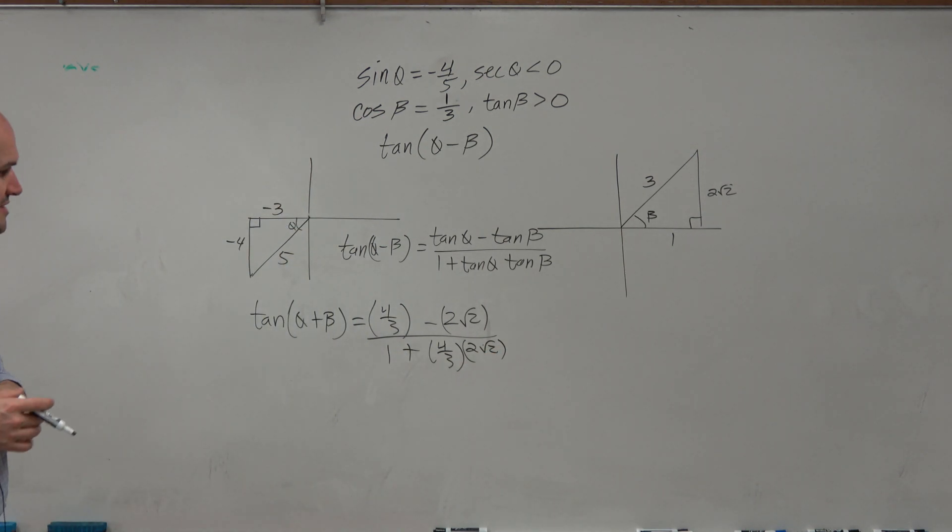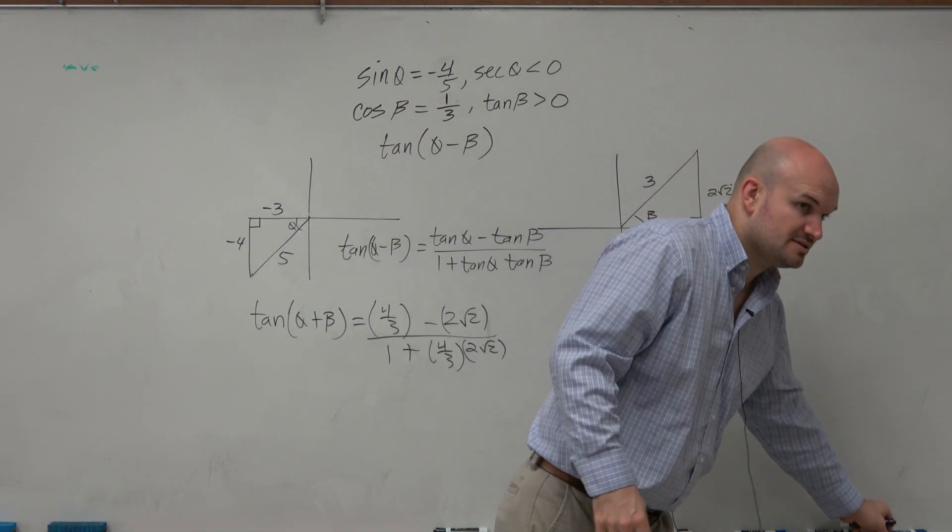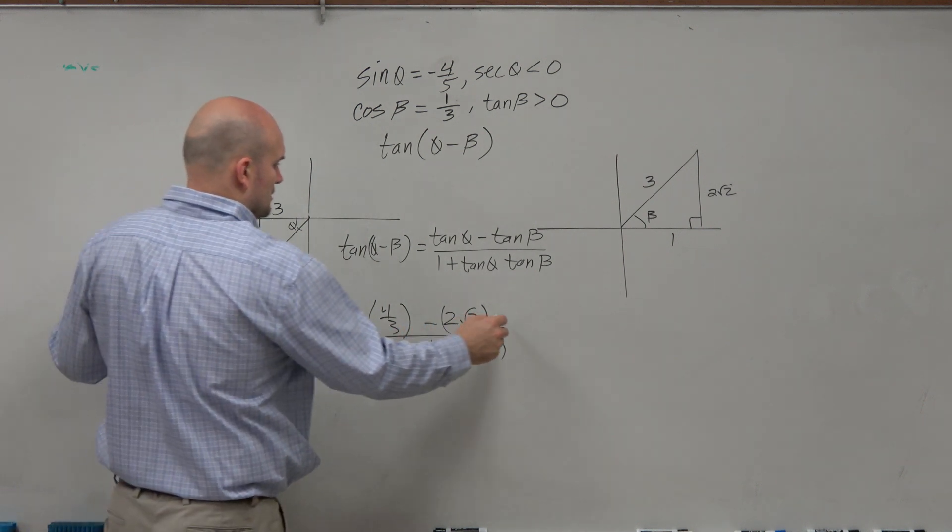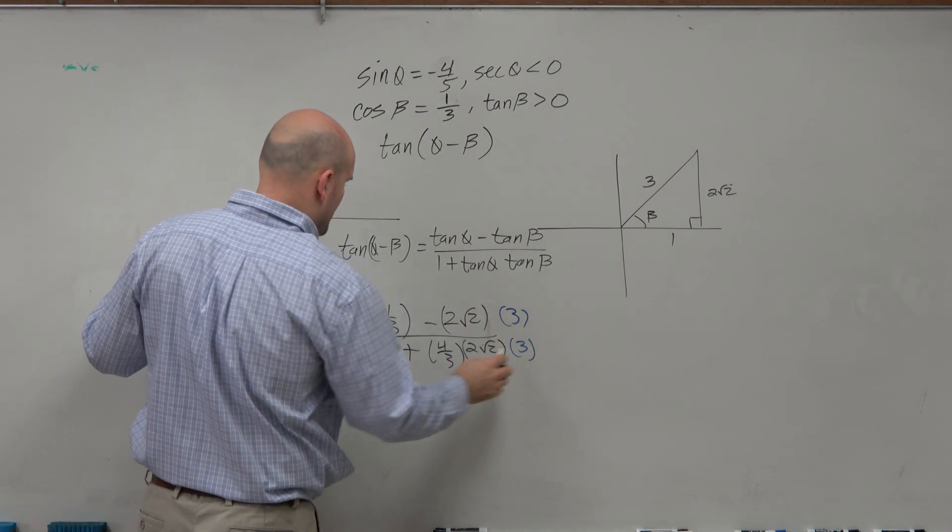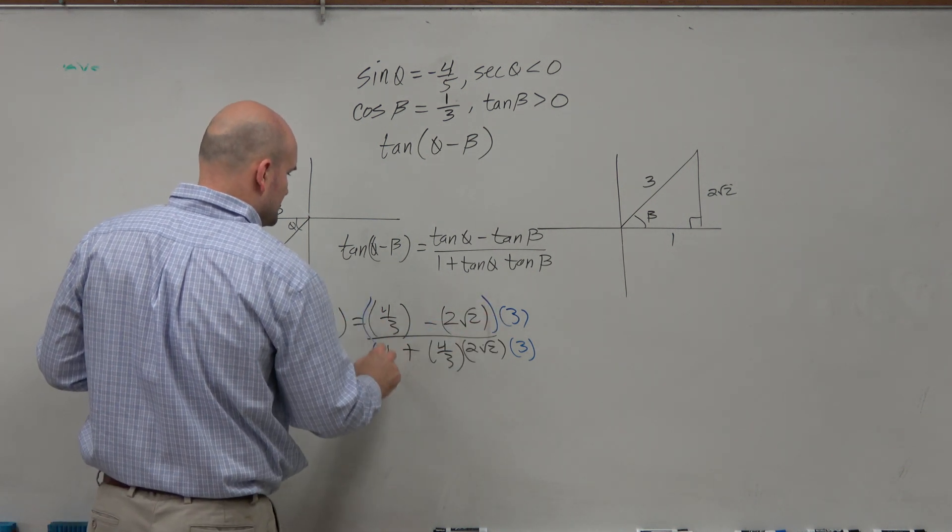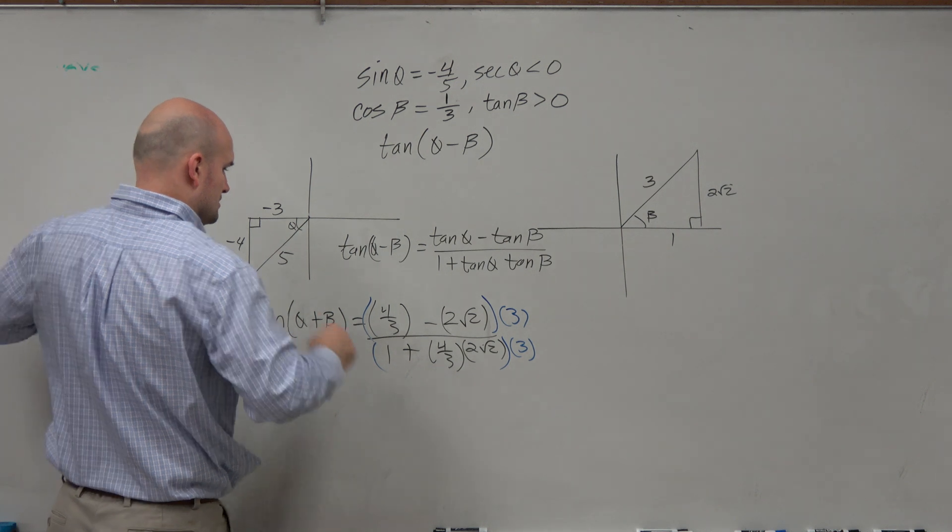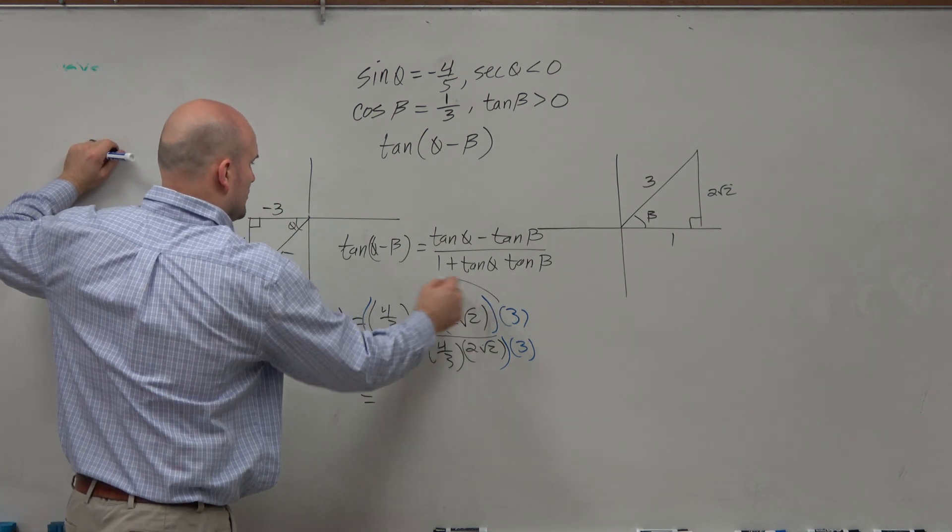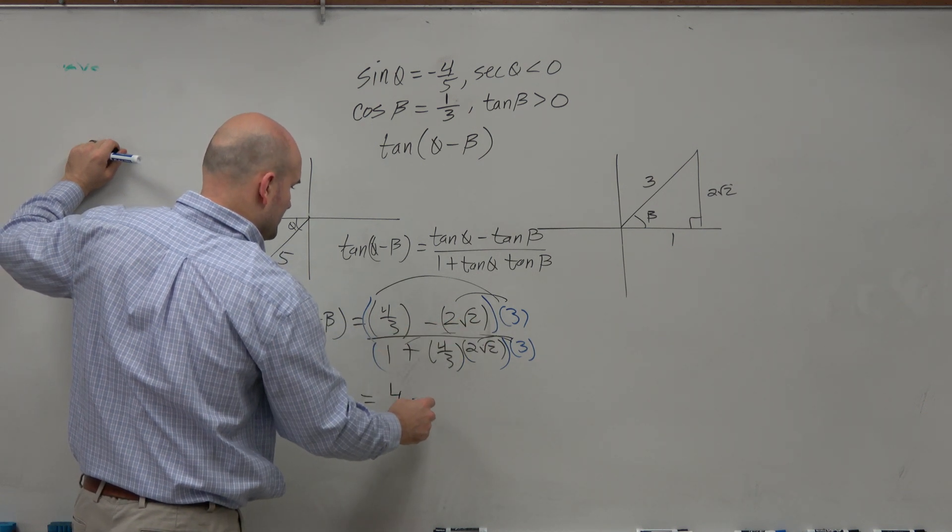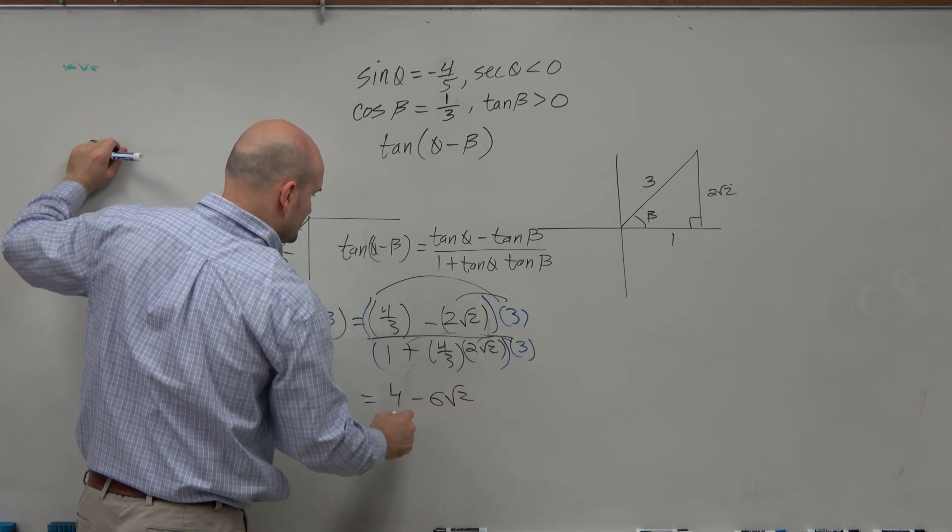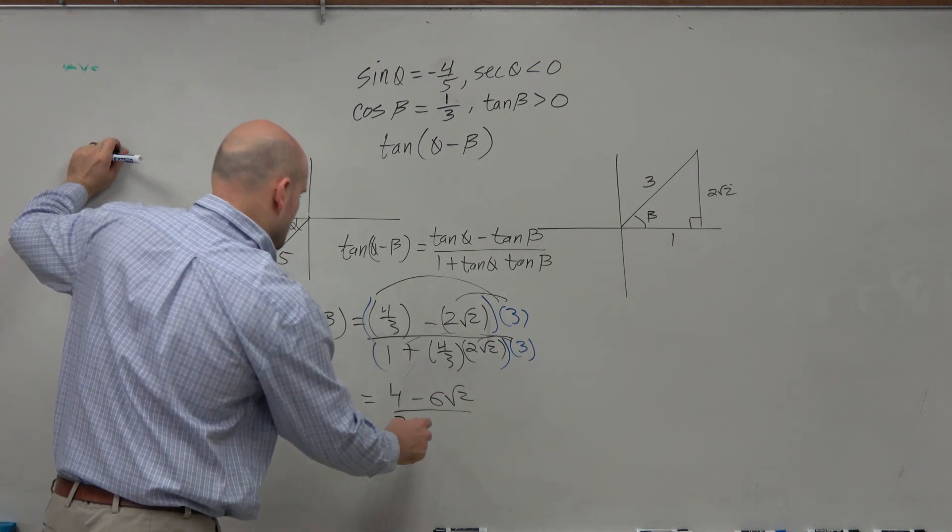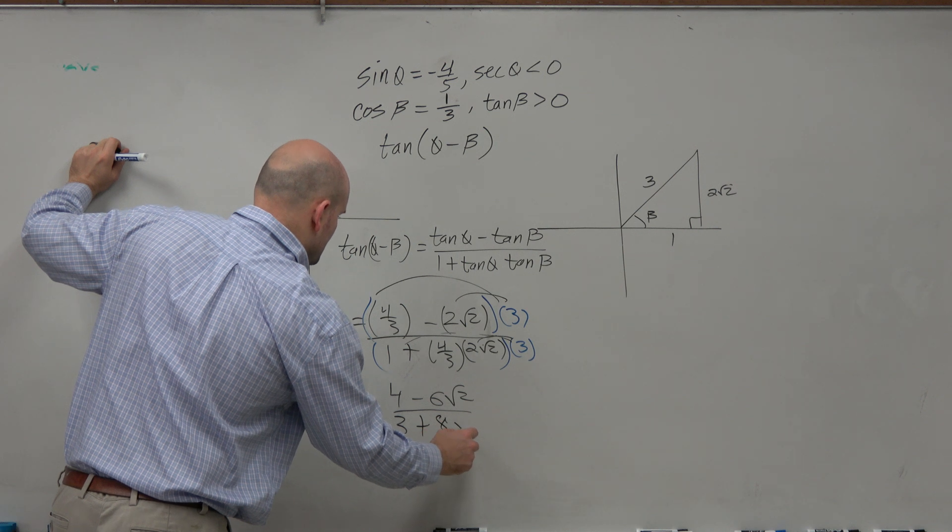Okay. Now, again, in this example, guys, we have a complex fraction, right? So we can simplify this. So we can multiply by a 3 over a 3. And make sure you apply the distributive property. Don't want to be that student. And now when we apply the distributive property here, we get 4 minus 6 square root of 2 all over 3 plus 8 square root of 2.